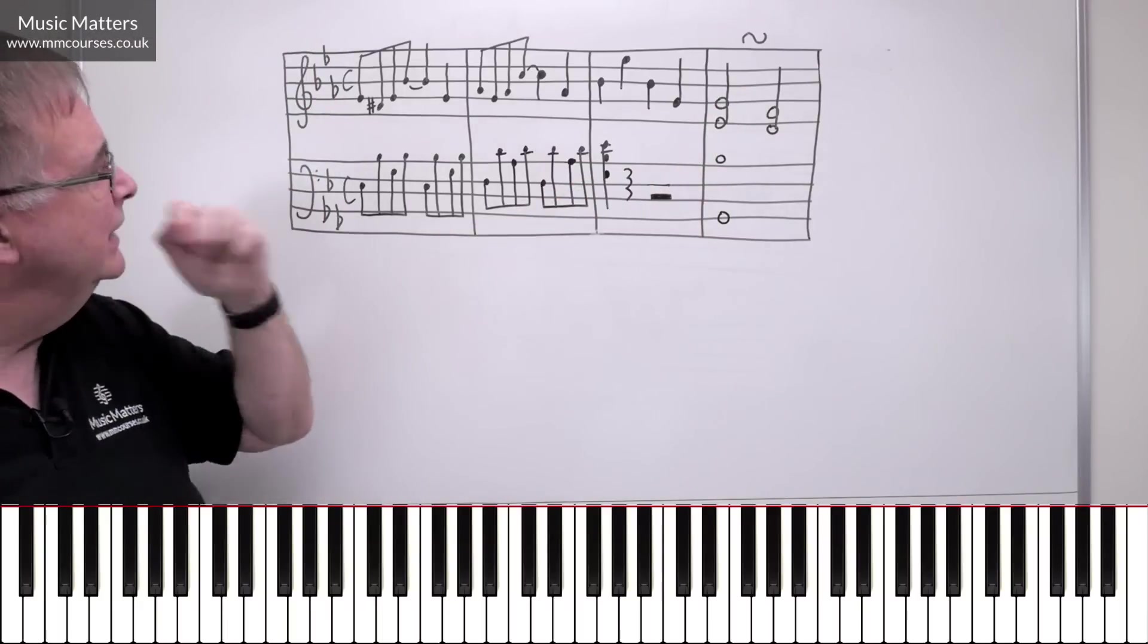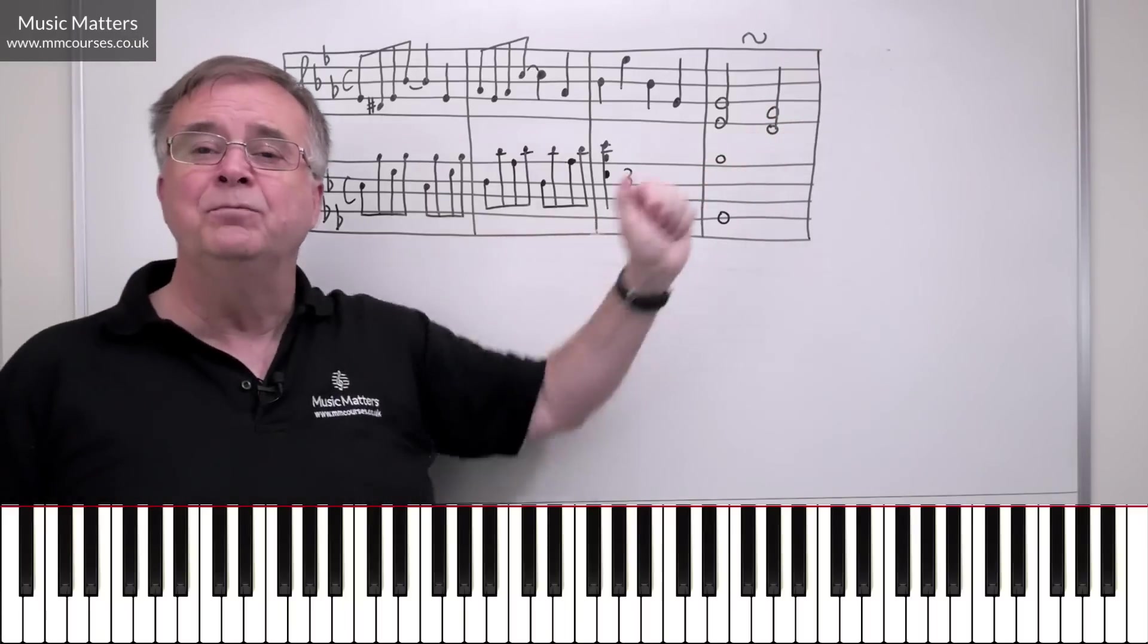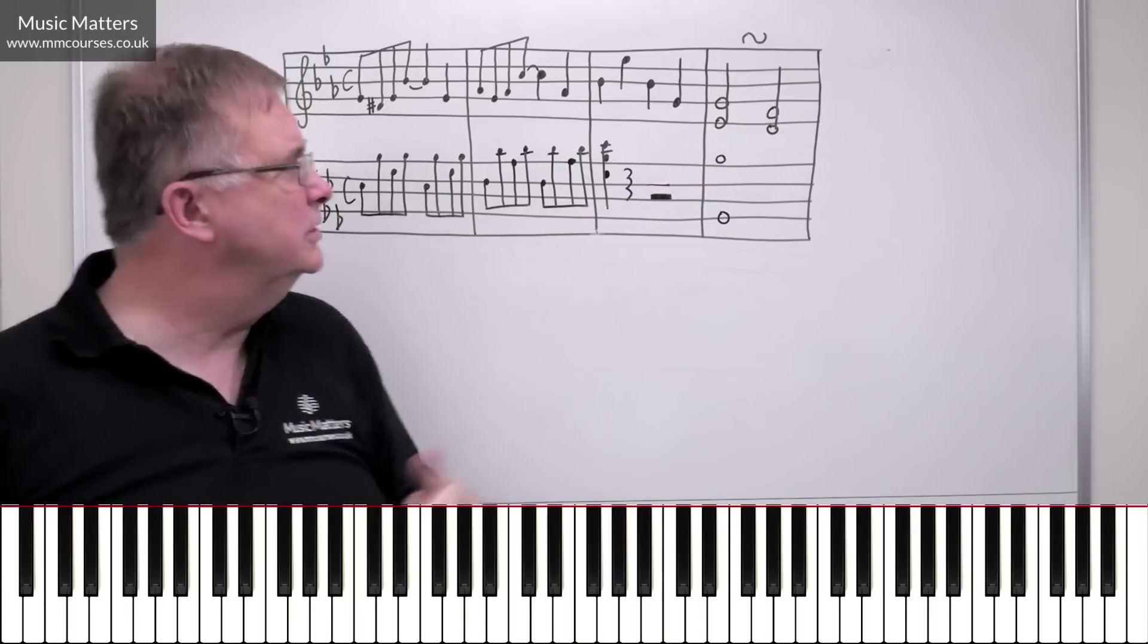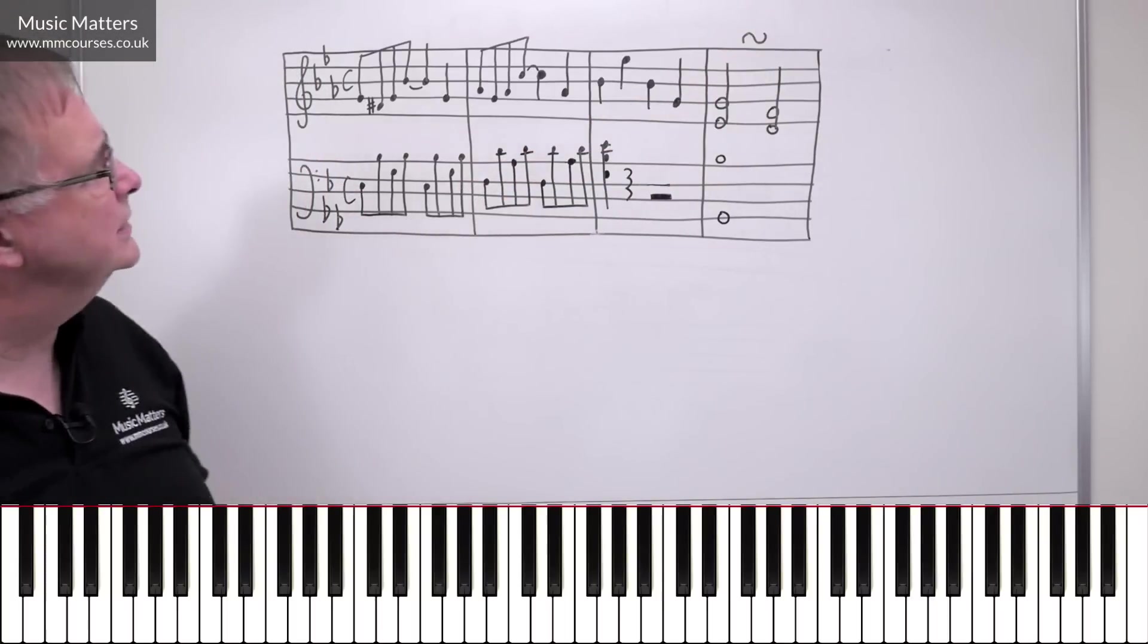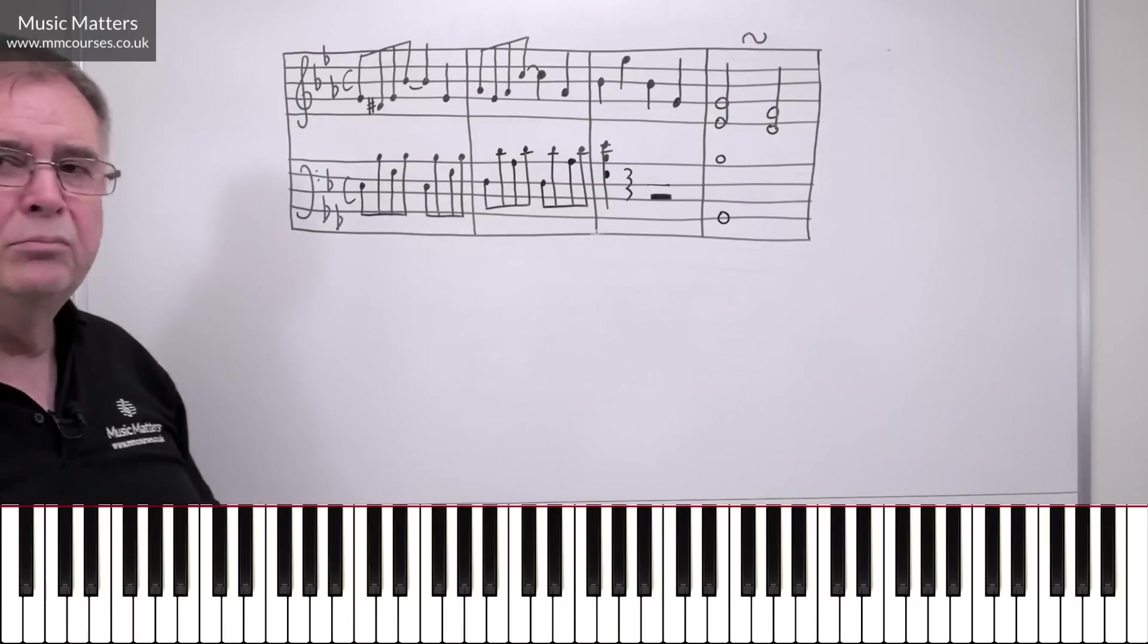So we're starting in the tonic key, we're going to an imperfect cadence. So the next phrase could take us on possibly coming back to the tonic key again, with a little turn figure imposed on the cadence, just to make it a little bit more classical.